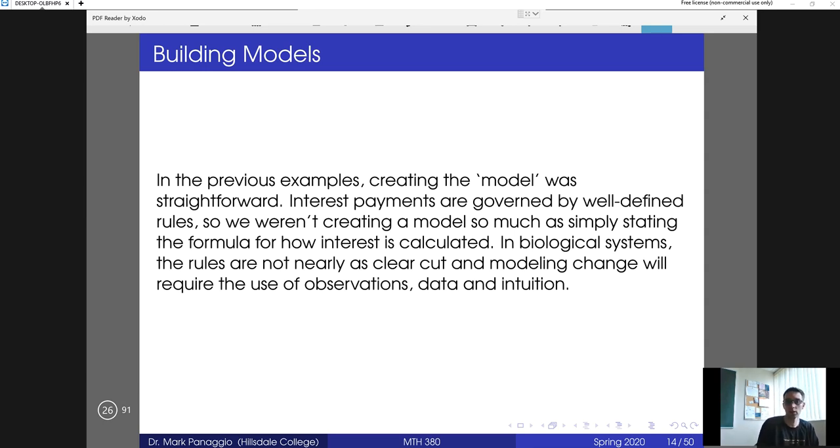As we've seen in the previous examples, interest and payments are very well defined and so writing down the rules is basically just recognizing a formula. But when it comes to other systems like biology, we're going to find that it's a little bit more difficult to describe the change in the state of the system, and so we're going to have to use both empirical observations, our intuition, and actually some data as well to try to formulate a model.